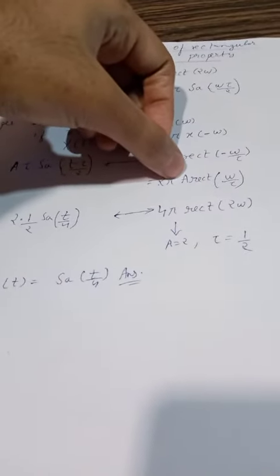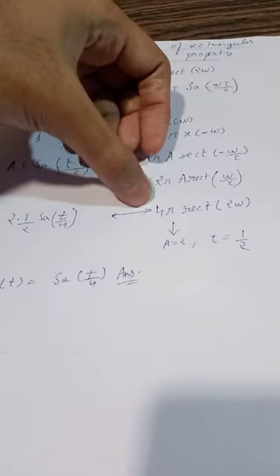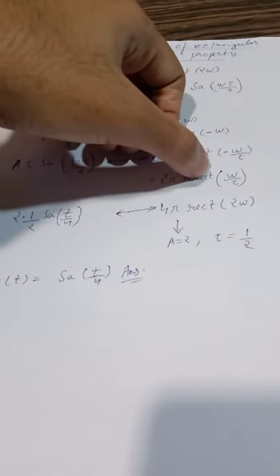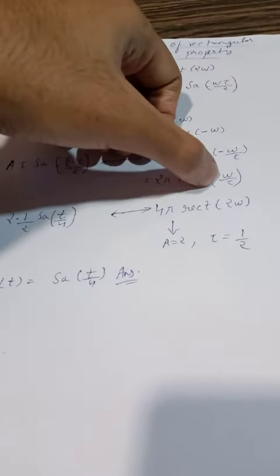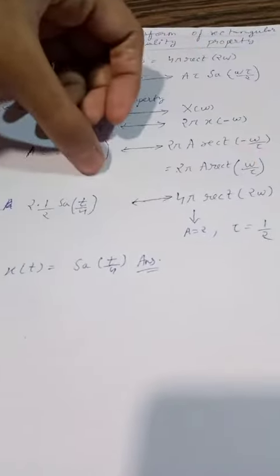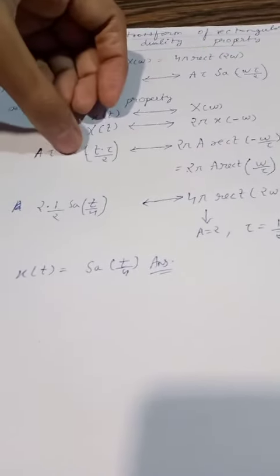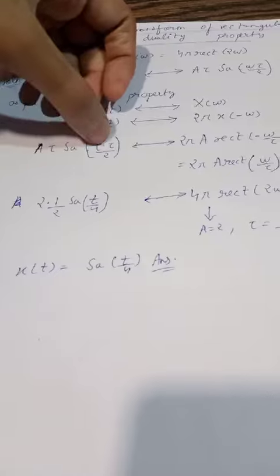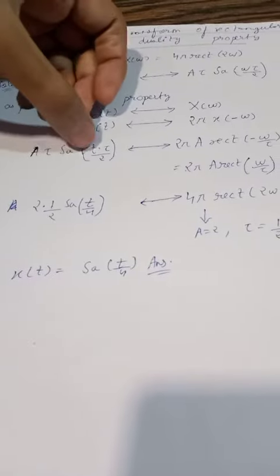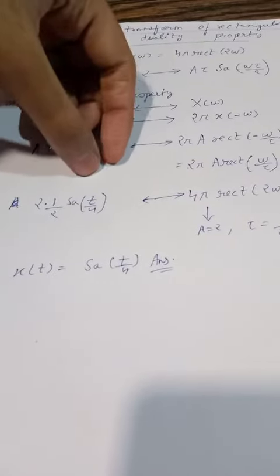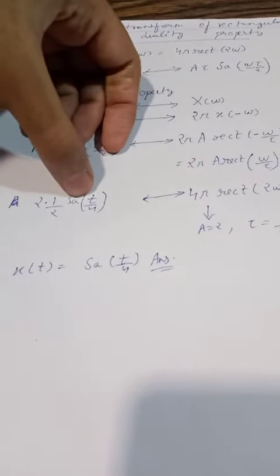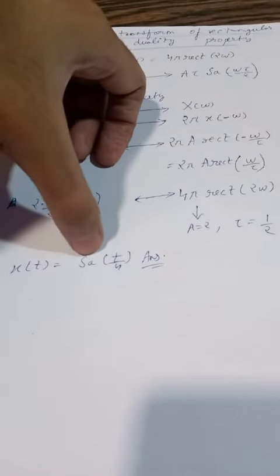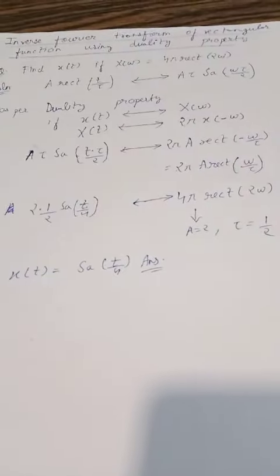Coming to our question: 4π·rect(2ω). Comparing with the general formula 2π·a·rect(ω/τ), the value of a is 2 and the value of τ is 1/2. Replacing a with 2 and τ with 1/2, the result is x(t) = Sa(t/4).